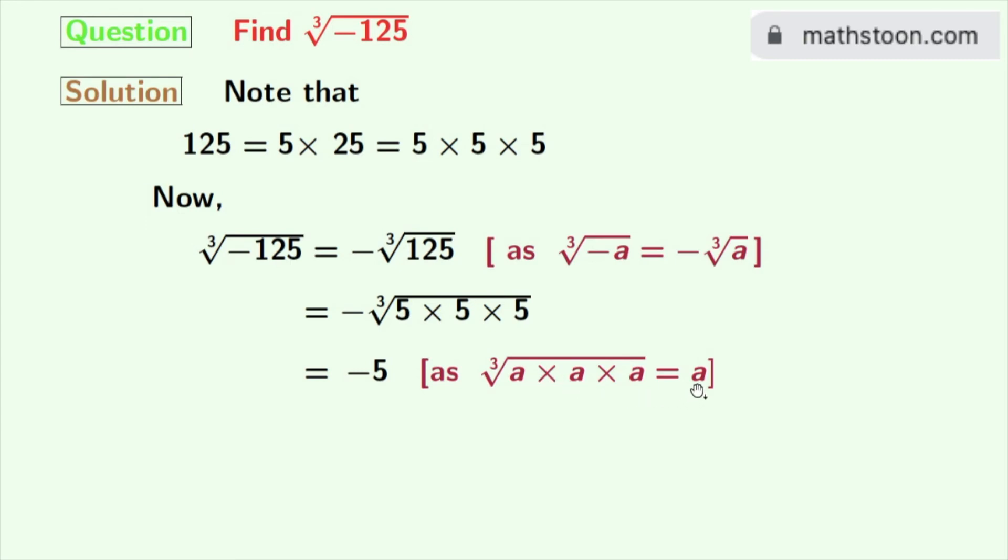Here a is 5, so finally we have cube root of minus 125 is minus 5.